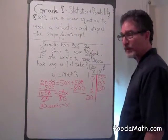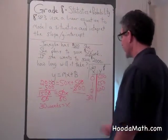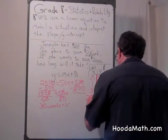30 times 50 is $1,500. Plus $500 would be $2,000.